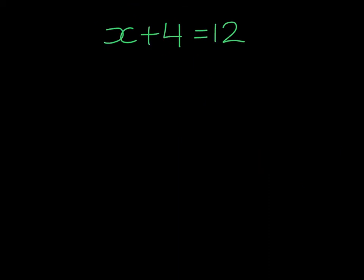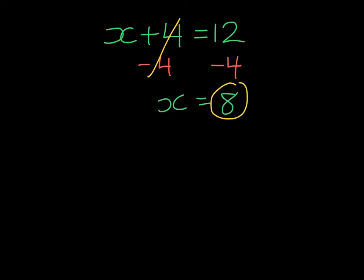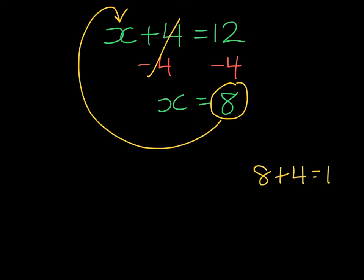In this equation, we see that we are adding 4. The inverse of adding 4 is to subtract 4, and we're going to do this on both sides, neatly underneath. So we'll subtract 4 on the left, and subtract 4 on the right. On the left-hand side, if I add 4 then subtract 4, I'm just left with X, and on the right-hand side, I'm left with 8. At this point, I can substitute 8 into the original equation — 8 and 4 will give me 12. So we've solved it correctly.